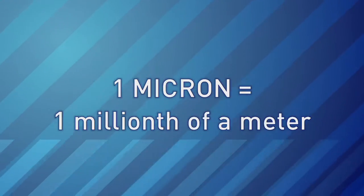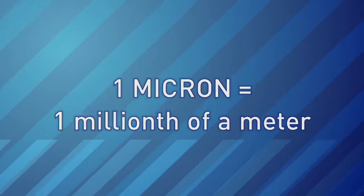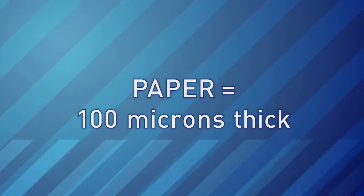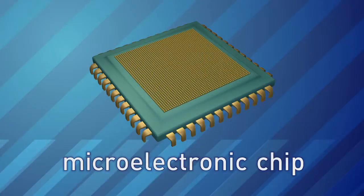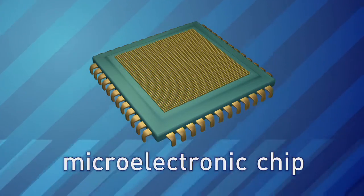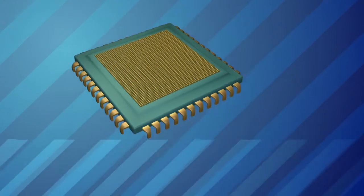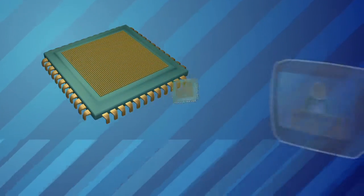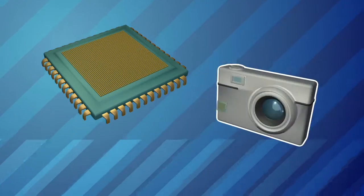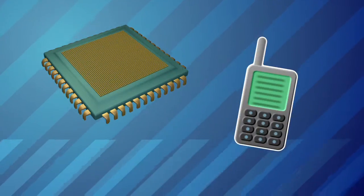Microelectronics is the field that makes electrical circuits very, very small at the micron scale. The micron scale is on the order of the thickness of a piece of paper or less than the thickness of a human hair. These small circuits run almost everything — they're the brains inside televisions, computers, cameras, and phones.